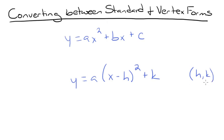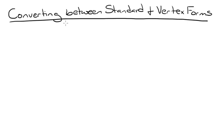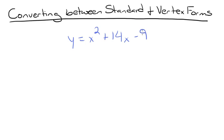So now that we've reviewed these forms, let's start by converting a standard form equation to vertex form. We'll convert y equals x squared plus 14x minus 9 to vertex form. In order to do this, we need to complete the square.